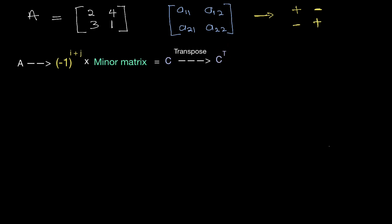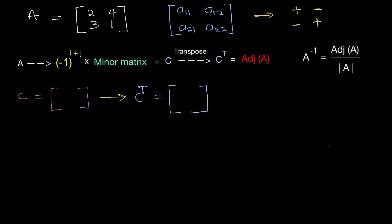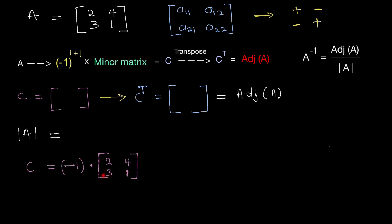The transposed cofactor is called the adjoint matrix of A. The inverse A to the power minus 1 equals the adjoint matrix divided by the determinant of A. The determinant must not be zero, because we cannot divide by zero. This is the cofactor method — we find the minor matrices for each element, then calculate the inverse as the adjoint over the determinant.